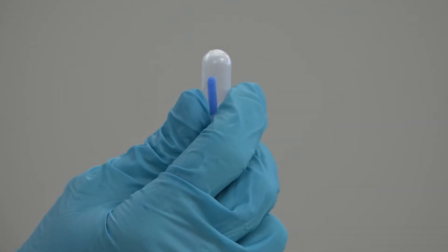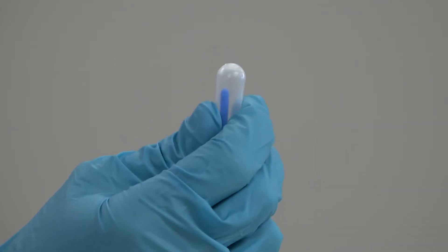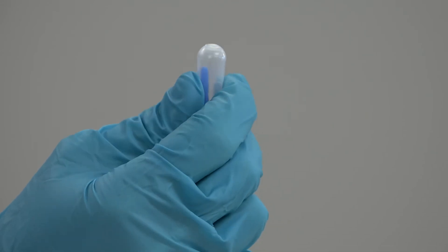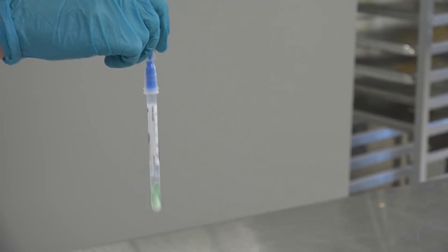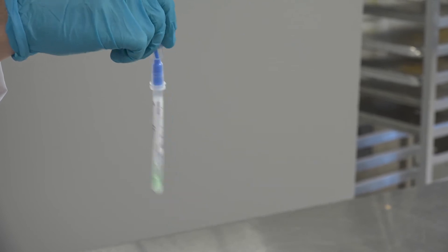Step number seven, squeeze the bulb twice to move the liquid into the tube. Step number eight, shake for five seconds.